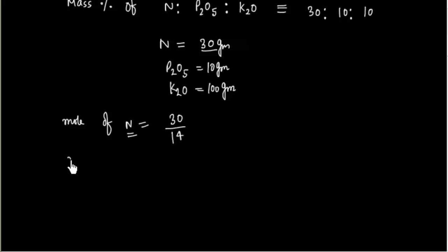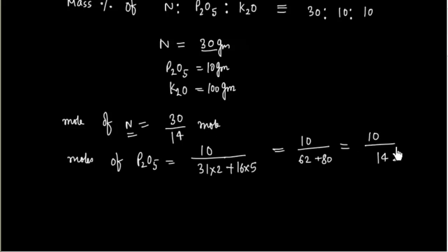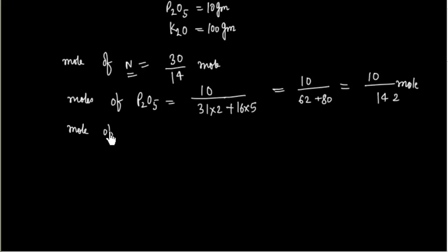We can also calculate moles of P₂O₅. This equals mass divided by molecular mass. The molecular mass of P₂O₅ is 31×2 plus 16×5, which is 62 plus 80, giving 142. So moles of P₂O₅ equals 10 divided by 142. Since each molecule of P₂O₅ contains 2 atoms of Phosphorus, moles of Phosphorus atom equals 2 times 10 divided by 142, which is 20 by 142.